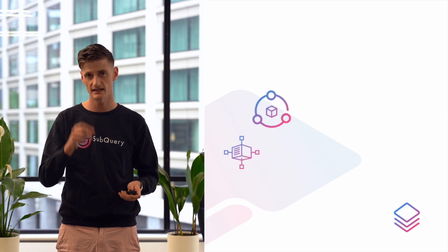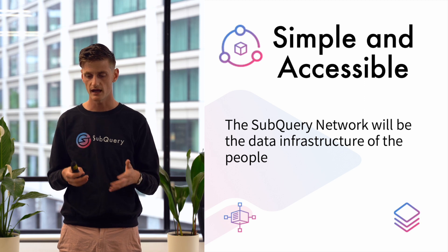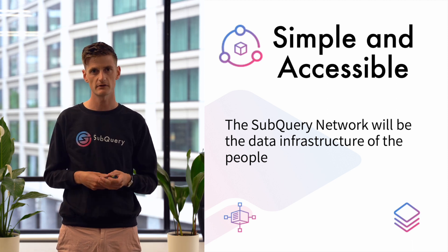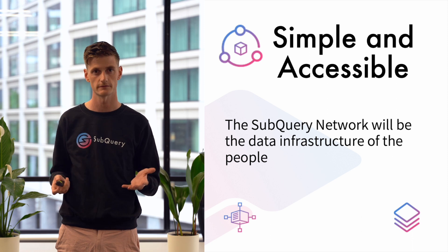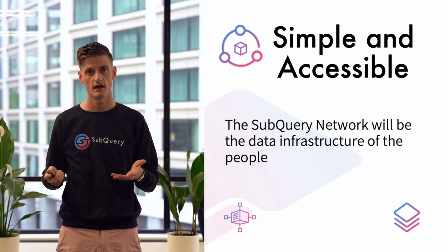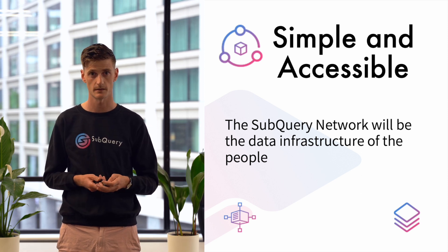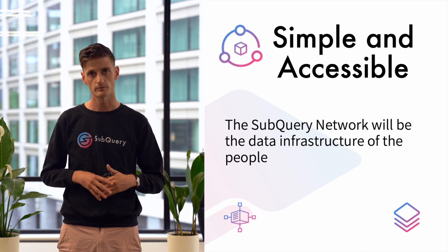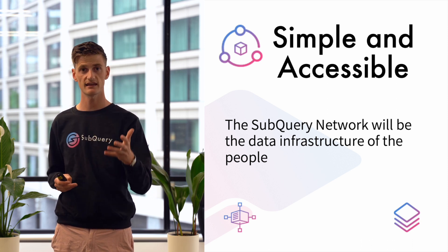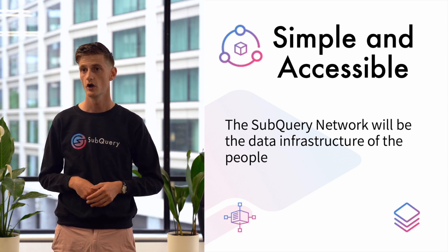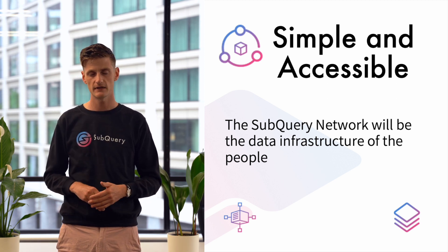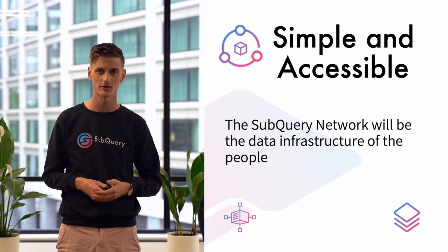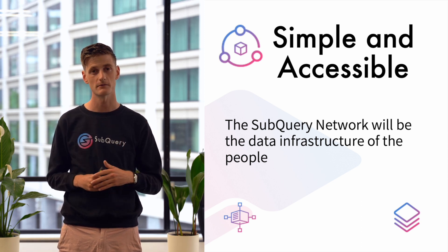The guiding principle of the subquery network is to make it as simple as possible. It's our view that other networks and data providers make overly complicated token economic models, which makes it harder for people to access and be a part of — it makes it hard to predict the rewards you may receive from participating, for example. We want to make it simpler and easier to understand. Being accessible means anyone can take part, whether you're a delegator wanting to put your spare tokens to work or you want to be an indexer. We don't expect to have any high minimum staking requirements and we're trying to lower the barriers to entry.